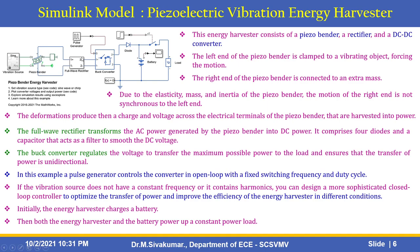The full-wave rectifier transforms the AC power generated by the piezo-bender into DC power. It comprises four diodes and a capacitor that acts as a filter to smooth the DC voltage. The buck converter regulates the voltage to transfer the maximum possible power to the load and ensures that power transfer is unidirectional. A pulse generator controls the converter in open loop with a fixed switching frequency and duty cycle. Initially, the energy harvester charges a battery, then both the energy harvester and the battery power a constant power load.